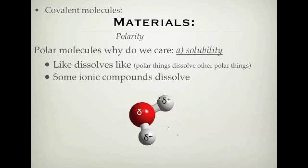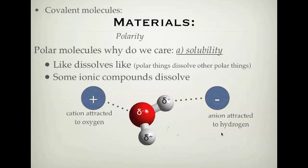What can happen for an ionic compound is that when it dissolves, it splits up into the anions and cations. The cation gets attracted to the oxygen area, the negative area. And the anions, they get attracted to the hydrogen area, the positive area.